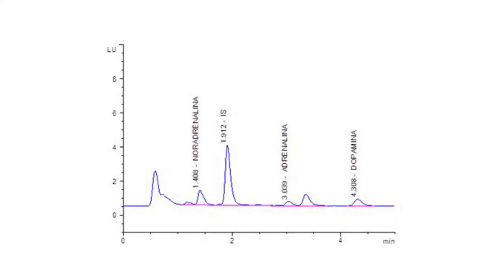This is a typical chromatogram of the plasma calibrator where the peak of noradrenaline comes out at 1.41 minutes, the internal standard at 1.91 minutes, while the peak of the adrenaline at 3.04 minutes, finally the dopamine at 4.31 minutes.